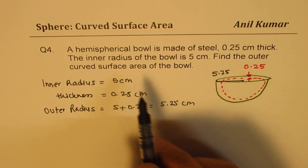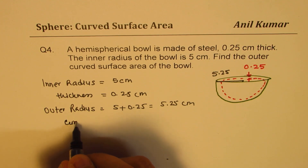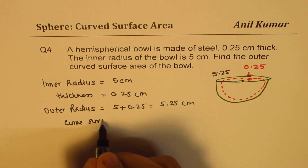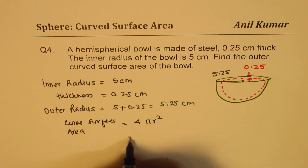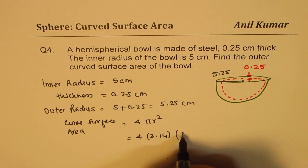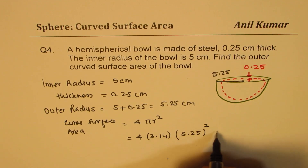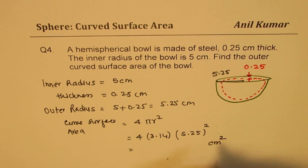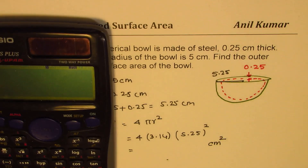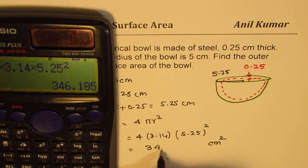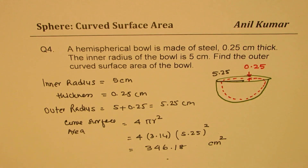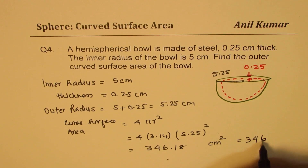Now apply the curved surface area formula: CSA = 4πr², but since this is a hemisphere we use 2πr² for the curved surface — however using the outer radius in 4 × 3.14 × 5.25²: 4 × 3.14 × 27.5625 ≈ 346.18 cm². Rounding, the outer curved surface area is approximately 346 centimeters squared.